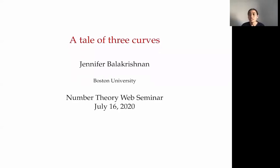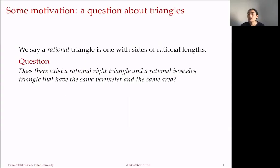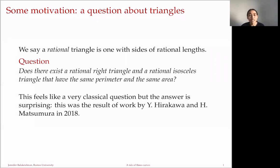The first question comes from a question about rational triangles. A rational triangle is one with sides that are all rational. We ask if there exists a rational right triangle and a rational isosceles triangle that have the same perimeter and the same area. This might seem like a question the ancient Greeks looked at, but it was just looked at very recently by two graduate students in Japan at Keio University, Hirakawa and Matsumura, in 2018.